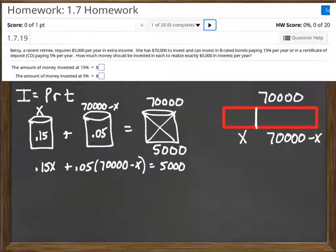So we do that, and we'll get the result that 0.15X added to 0.05 times 70,000 minus X equals 5,000. That is our equation, and that's really the bulk of the work in the problem, and now we just solve it. So if you need to, you may want to pause it, take a moment, and solve that yourself.